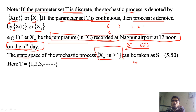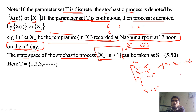For example, on day 1 (n=1), x1 = 15 degrees. On day 2 (n=2), x2 = 14 degrees. On day 3 (n=3), x3 = 12.5 degrees. Collecting all these random variables x1, x2, x3, x4, x5, ..., xn gives a set. We define this set as {x(n) : n ≥ 1}, written as {x1, x2, x3, ..., xn}. This set is called the stochastic process or random process.